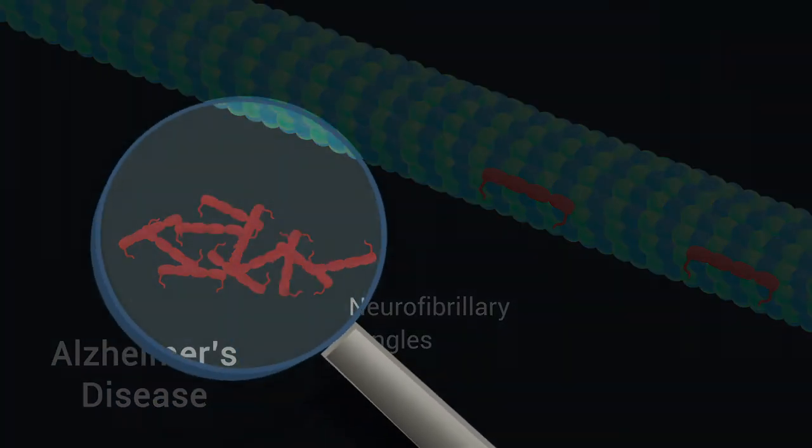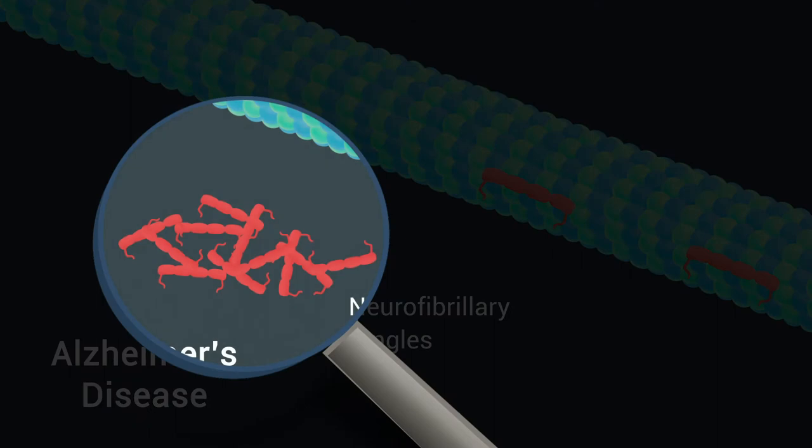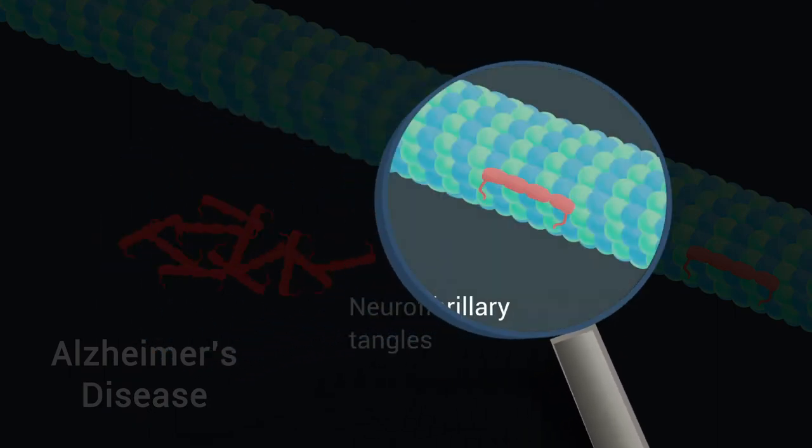While we know the structure of amyloid tau fibrils, the physiological conformation of microtubule-bound tau remains controversial. In this study,